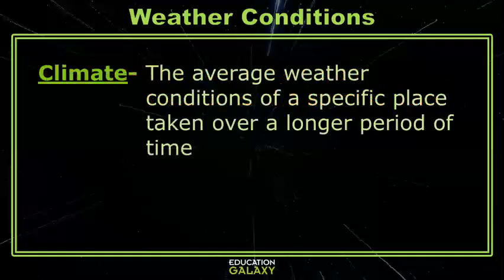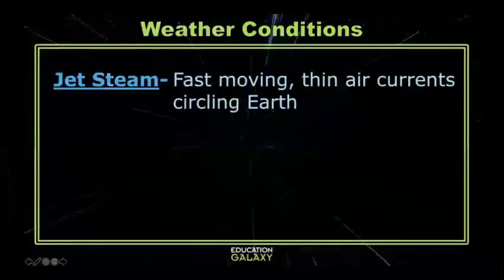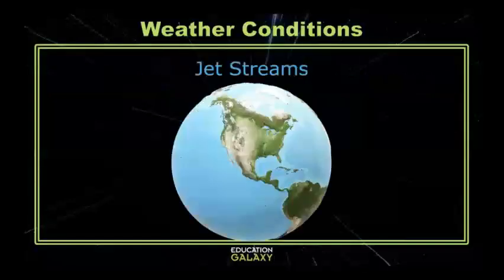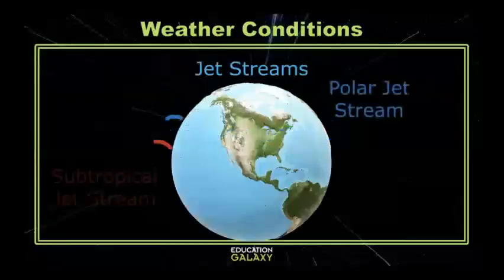Climate is the average weather of an area over a longer period of time based on the area's latitude, longitude, altitude, topography, nearby oceans, and jet streams. Jet streams are fast, narrow currents of air, and there are two main jet streams that affect the U.S. — the polar jet stream and the subtropical jet stream.